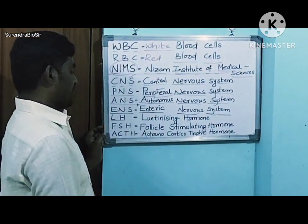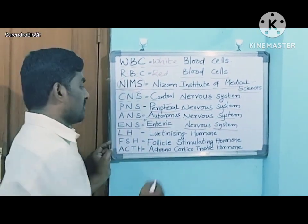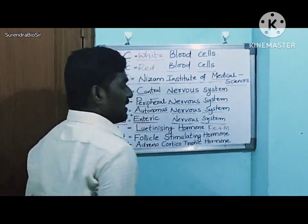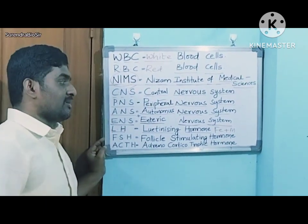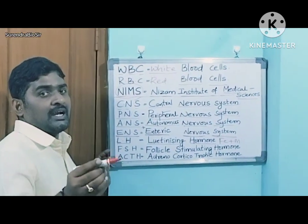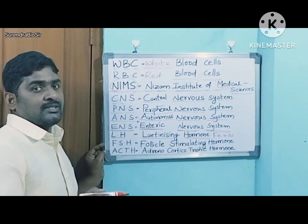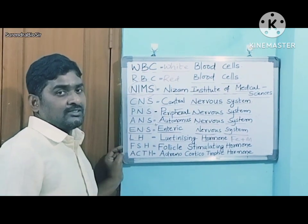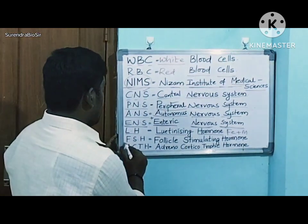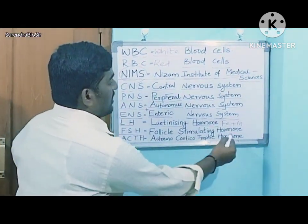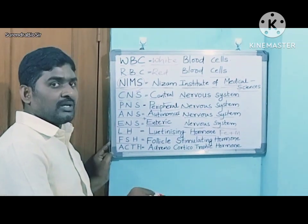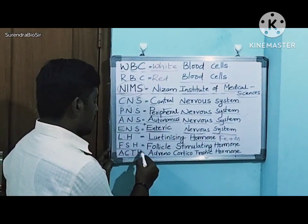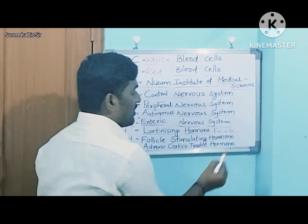Next: LH — Luteinizing Hormone, which is present in both males and females and is secreted by the pituitary gland — the master gland of the endocrine system, which controls all other glands in the body. Next: FSH — Follicle Stimulating Hormone, also present in both males and females. Next: ACTH — Adrenocorticotropic Hormone.